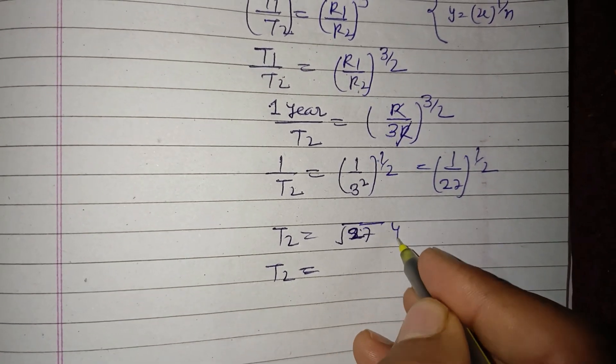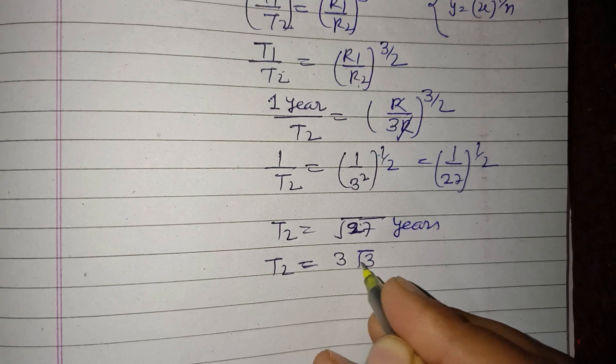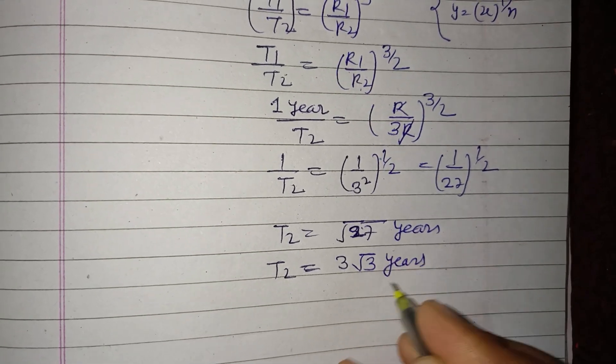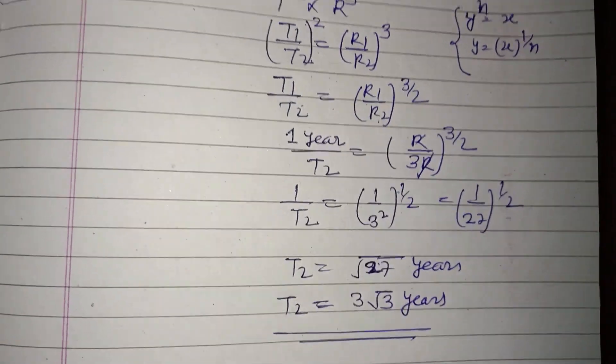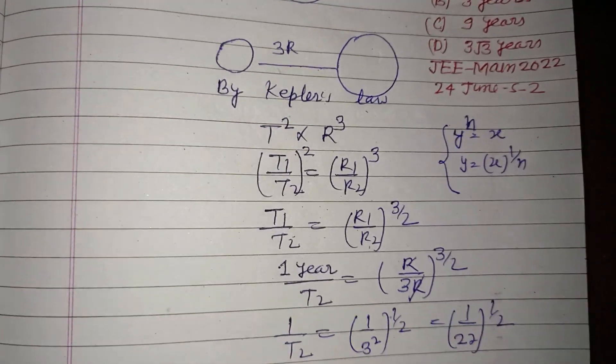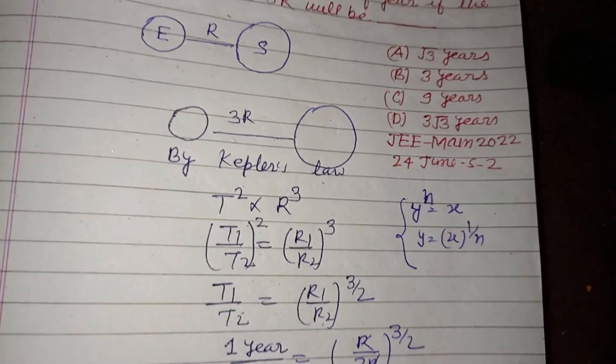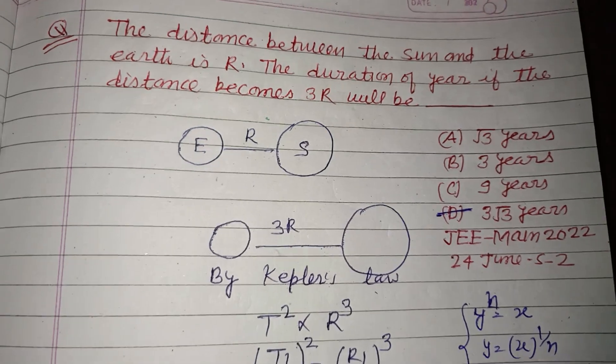And this is 3 root 3 years. So time period of revolution of Earth is 3 root 3 years, which is found in option D. Option D is correct.